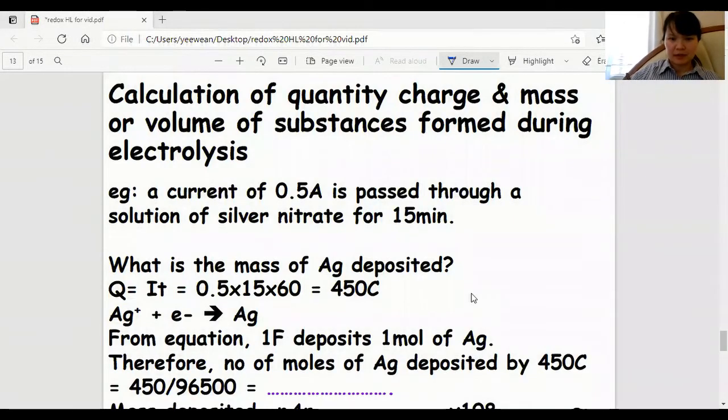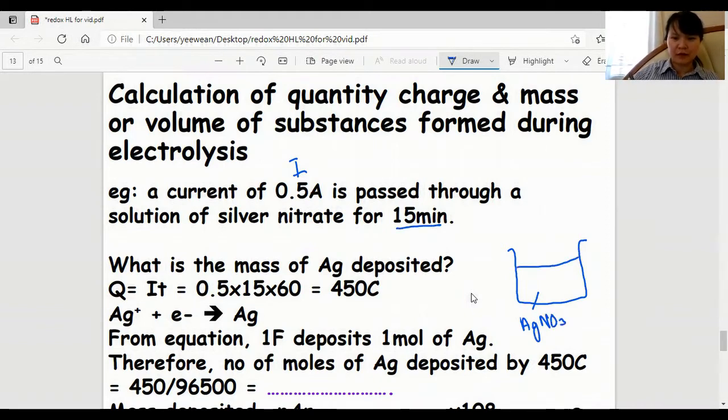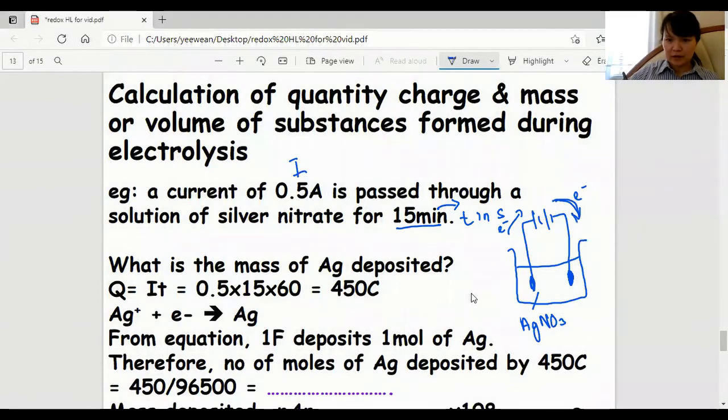Let's discuss an example. A current of 0.5 ampere is passed through a solution of silver nitrate AgNO3 for 15 minutes, which we'll convert to seconds later. The electrons move this direction, therefore silver is deposited here. The mass is proportional to Q, which equals IT.